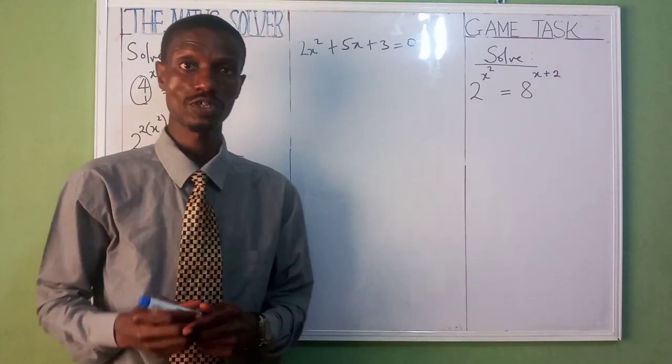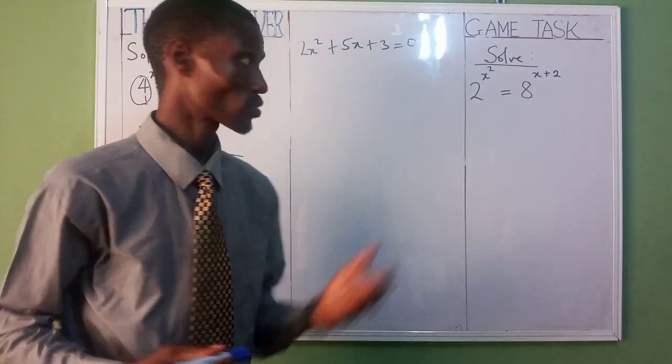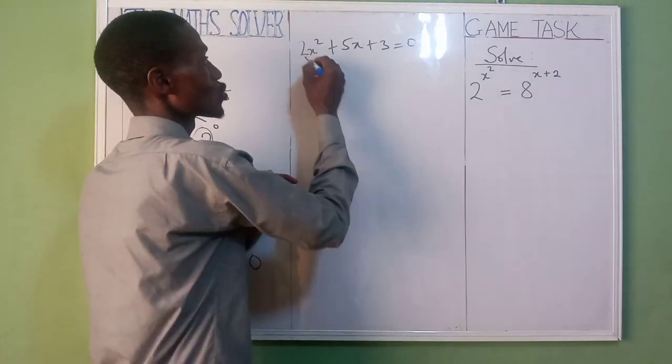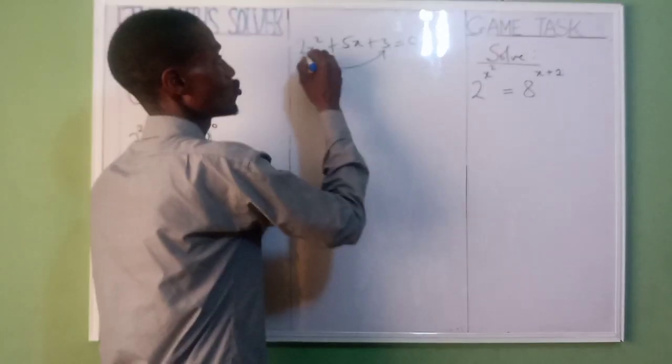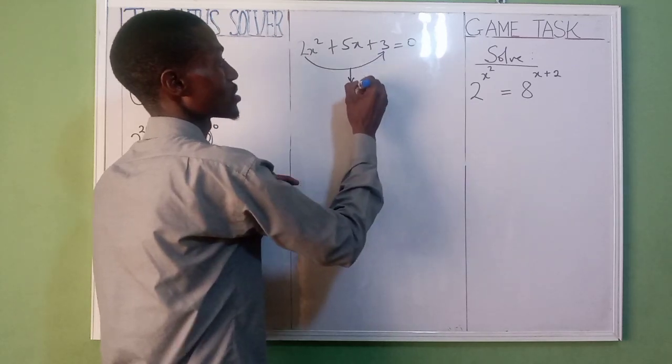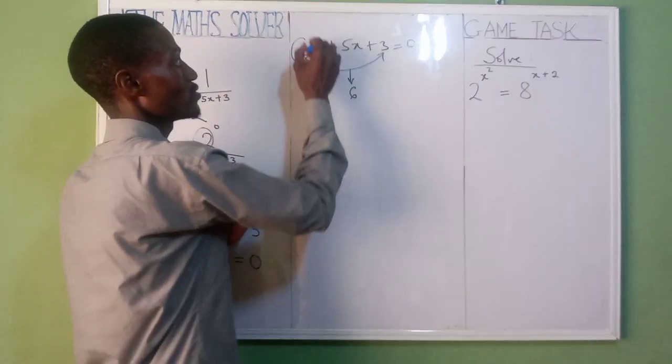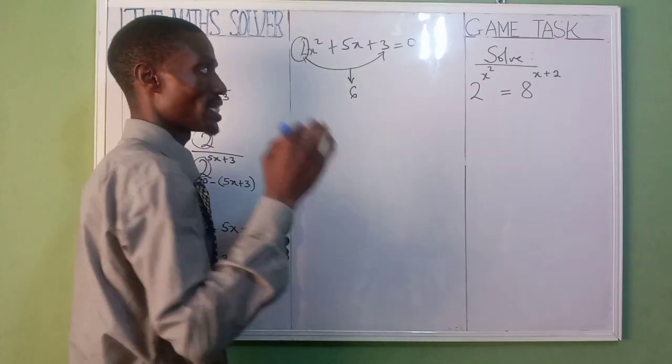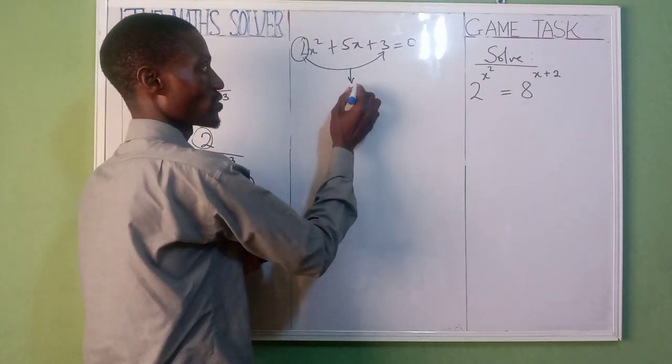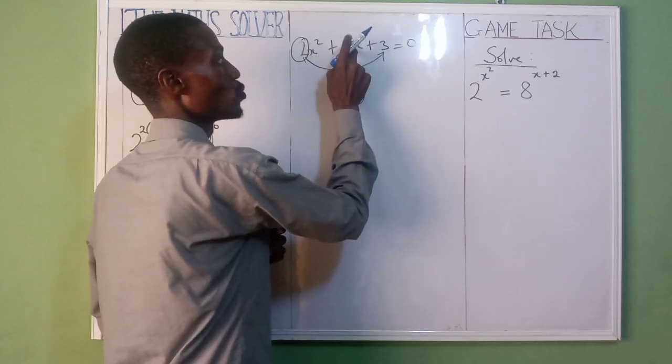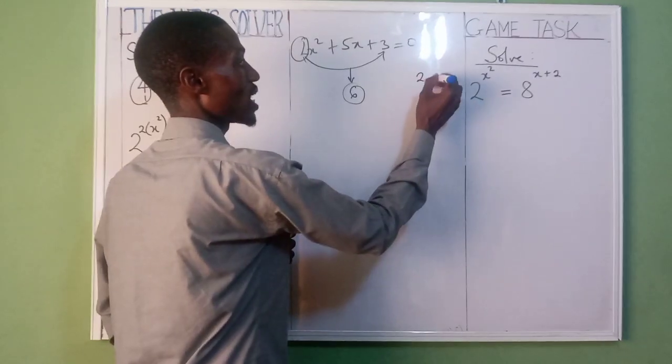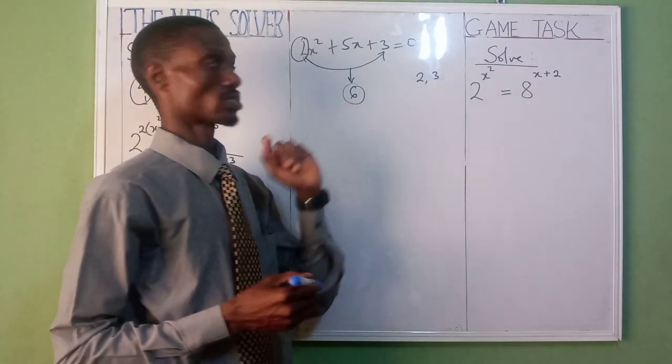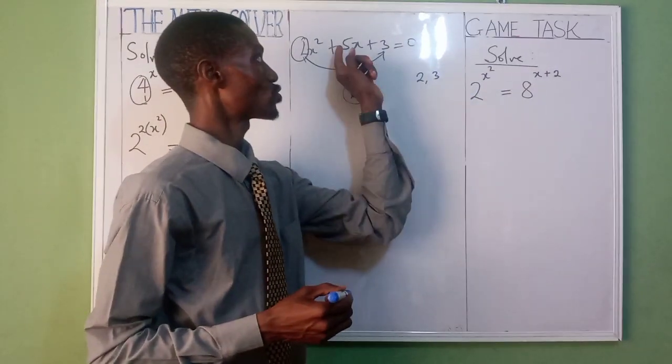Now let's factorize it. We have 2x squared plus 5x plus 3 equal to 0. We had mentioned this in our previous video on how to factorize. You multiply the first one and the last one together: 2 times 3, that's going to be 6. Let's take off two numbers multiplied together that will give us 6, and by the time we add it together, we get the middle one. That's going to be 2 and 3.